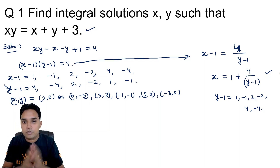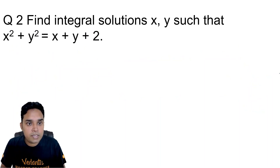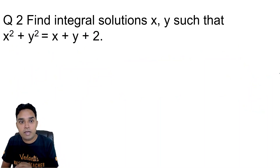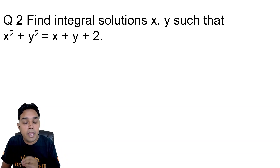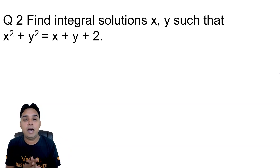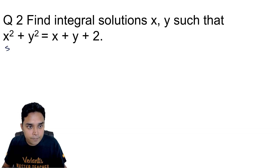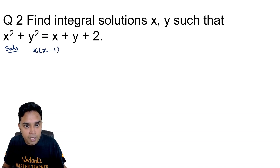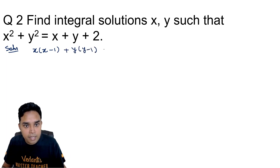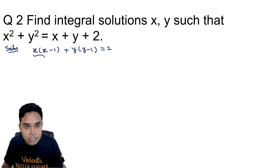The next question is: find integral solutions x, y such that x² plus y² is equal to x plus y plus 2. Through this question I will show you multiple approaches. My first approach: you can write this as x(x minus 1) plus y(y minus 1) equals 2, by moving x and y to the left-hand side. These expressions x(x−1) and y(y−1) are both products of two consecutive integers.